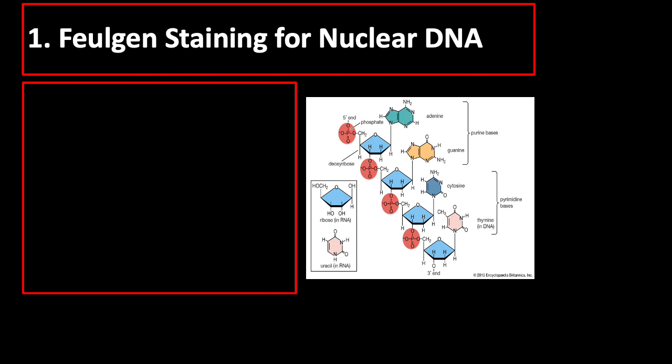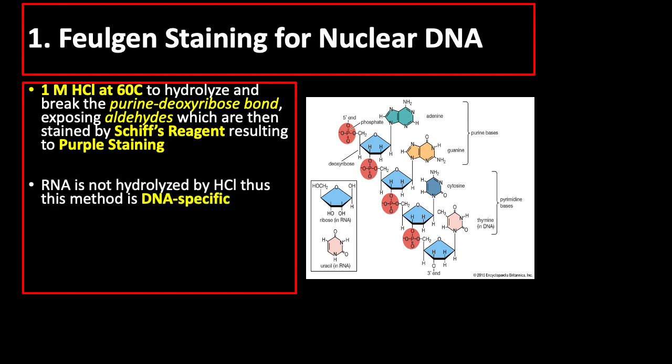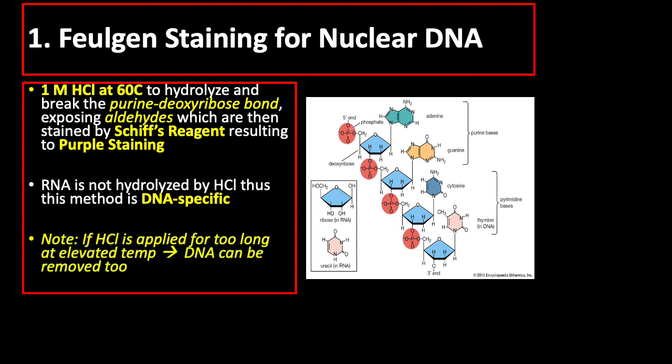Feulgen staining for nuclear DNA is a technique used to identify chromosomal material or DNA in cell specimens. It uses 1 molar hydrochloric acid at 60°C to hydrolyze and break the purine-deoxyribose bond, exposing aldehydes which are then stained by Schiff's reagent, resulting in purple staining. RNA is not hydrolyzed by the HCl treatment and thus the reaction is DNA specific. However, if acid hydrolysis is applied too long, especially at elevated temperature, the DNA can be completely removed — a known source of failure in this technique.